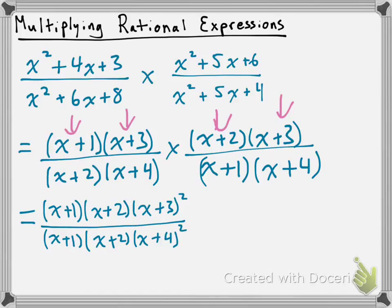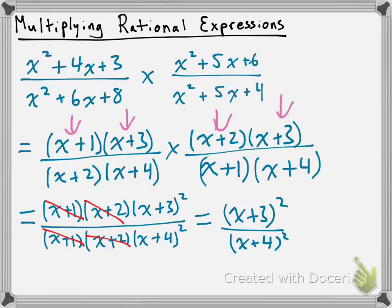Now that we've brought this together into one big rational expression, we're going to look for common factors to cancel. I have a common factor of x plus 1 in the numerator and denominator, so that cancels. I also have a common factor of x plus 2 that I can cancel, and that's going to leave me with x plus 3 squared over x plus 4 squared. That's our final answer — we can't cancel anything else out. We've fully simplified as much as we can.